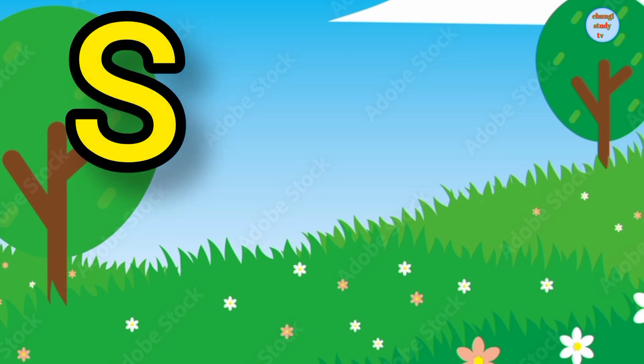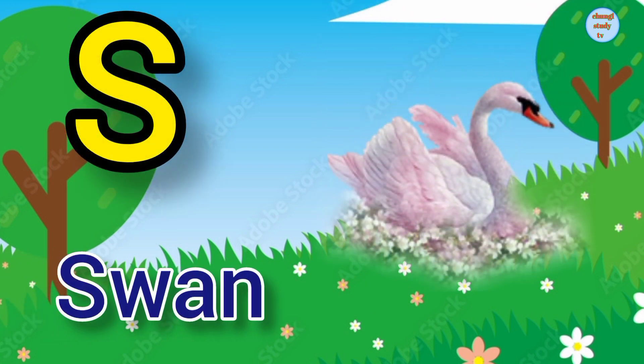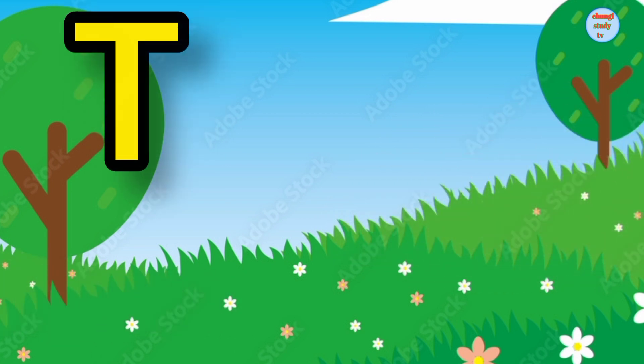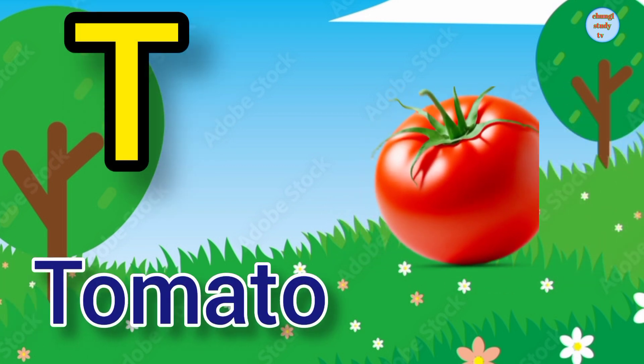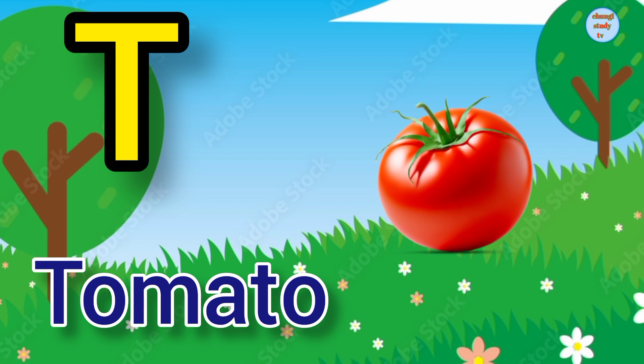S. S for swan, swan means hans. T. T for tomato, tomato means tomato.